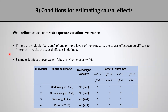To have a more concrete idea of this problem, let us consider a simple example involving the effect of overweight or obesity on mortality. We have four individuals, each with a different nutritional status: individual one is underweight, individual two has normal weight, and so on. Individuals three and four are classified as exposed because they are overweight or obese, and individuals one and two are classified as unexposed.